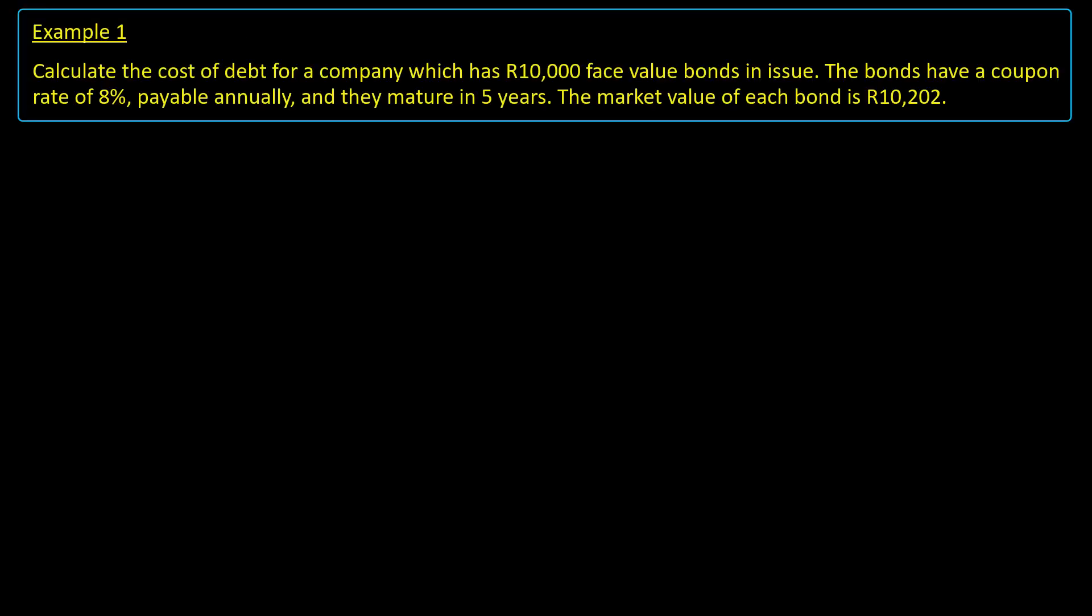Let's apply these steps to the earlier bond example. Here we are asked to calculate the cost of debt for a company with R10,000 annual pay 8% coupon rate bonds which are 5 years from maturity. The market value today is R10,202.